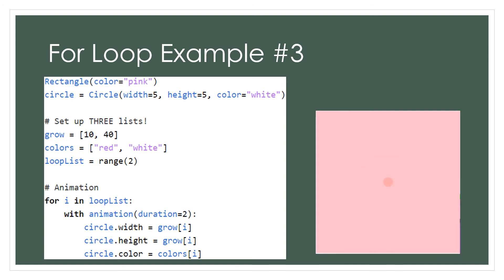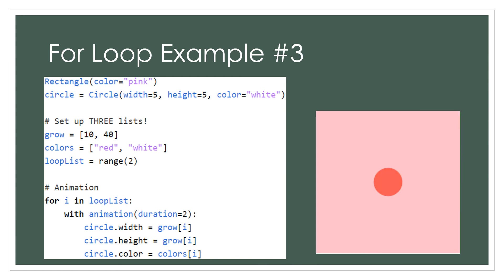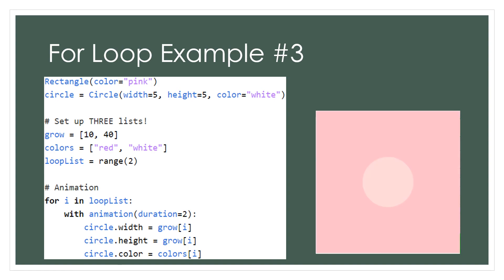As a final note, you've probably noticed a statement starting with a number sign, also called a hash or a pound sign. These are called comments, and they can help to organize code when it gets long. The number sign tells the computer to ignore anything after it on that line, so you can write whatever you want. Here, I used comments to explain what the next chunk of code was doing.